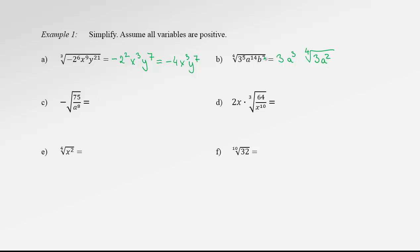Finally, for b to the 7: 4 goes into 7 once, so b to the 1 goes out of the radical, and since we have remainder 3, b cubed stays under the radical sign. Our expression is simplified.